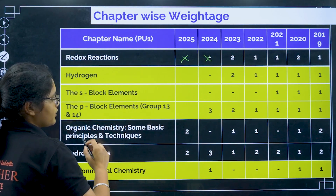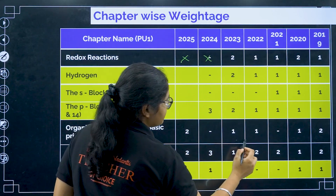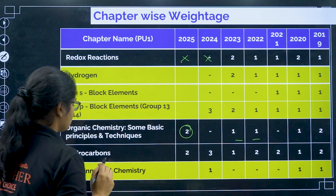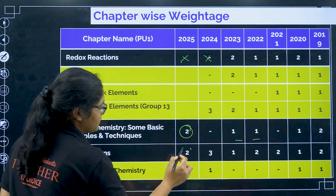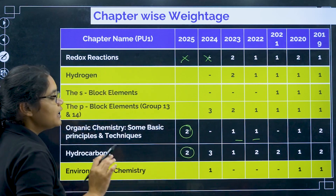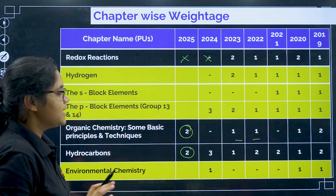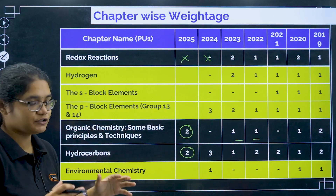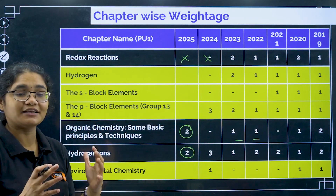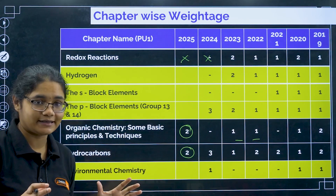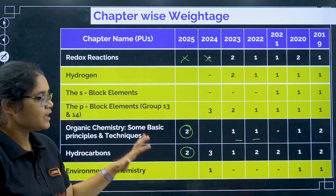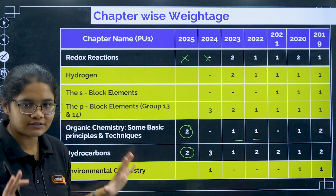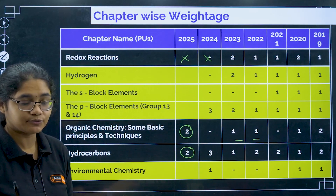For organic chemistry, we used to get one question; this year we got two questions. Hydrocarbons also gave two questions. The yellow-marked chapters you see are the ones that are deleted — I have just highlighted them and you do not have to study those chapters.